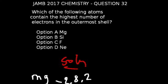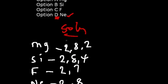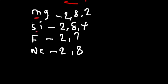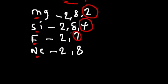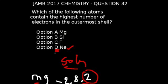Which of the following atoms contains the highest number of electrons in the outermost shell? This is question number 32 of the JAM 2017 chemistry exams. The correct answer is option D, which is neon. We are presented with magnesium, silicon, fluorine, and neon. Magnesium has 2 electrons in the outermost shell, silicon has 4, fluorine has 7, and neon has 8 — the highest number. Therefore the answer is D, neon.